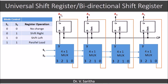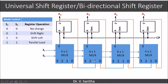When S1, S0 is 0,1 it is shift right. That means A4 should go to A3, A3 should go to A2, A2 should go to A1, and a new bit should be coming into A4. So we connect: A2 going to A1, A3 going to A2, A4 going to A3, and the new bit will be given to A4.